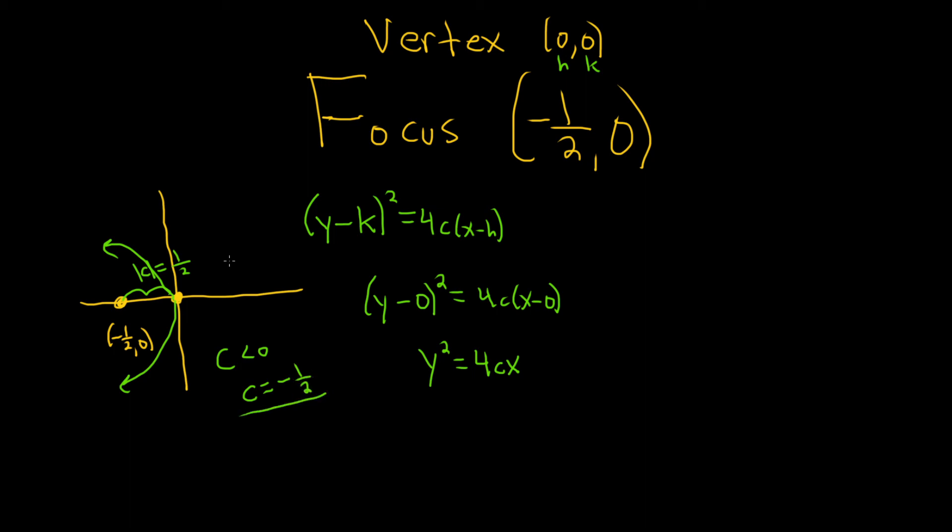So now we just take the c and we plug it in. So y² = 4 times (-1/2) times x. So that means that y² = -2x. And that would be the equation of the parabola.